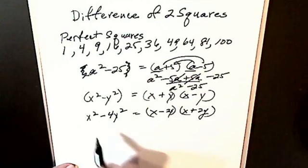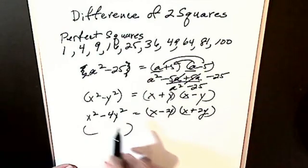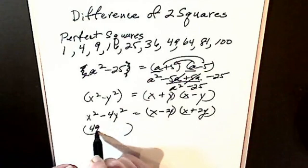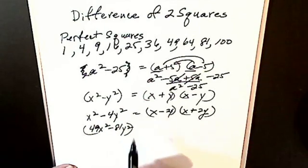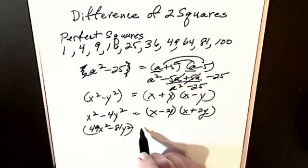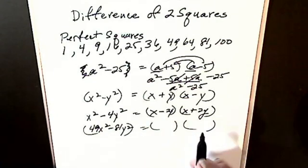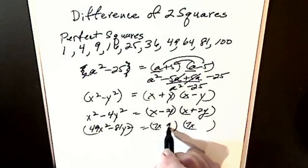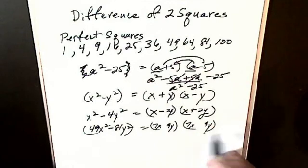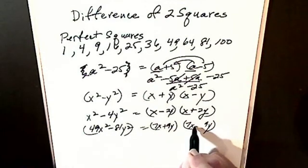We'll try one more with two coefficients. Let's say I have 49x squared minus 81y squared. I have difference of two squares. I can factor it. I get 7x, 7x. I get 9y, 9y, one is plus, one is minus.